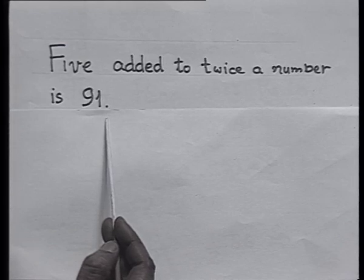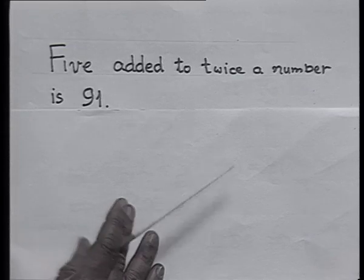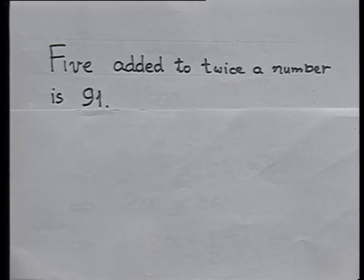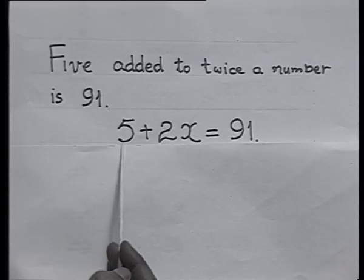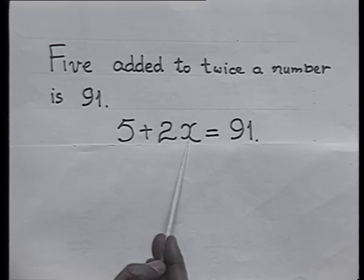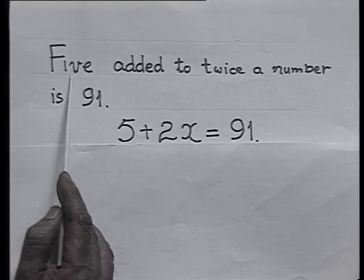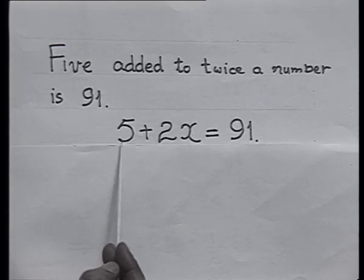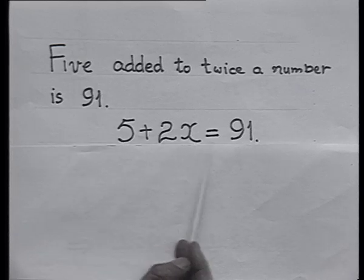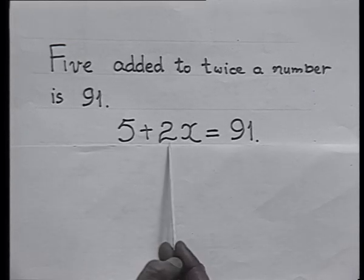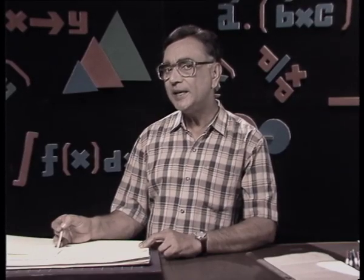Let us see how we solve it. The number is not known to me, so I take the number as x. Because we have to add 5 to twice a number to get 91, this statement takes a mathematical form: 5 plus 2x equals 91. Such expressions in mathematics we call linear equations.